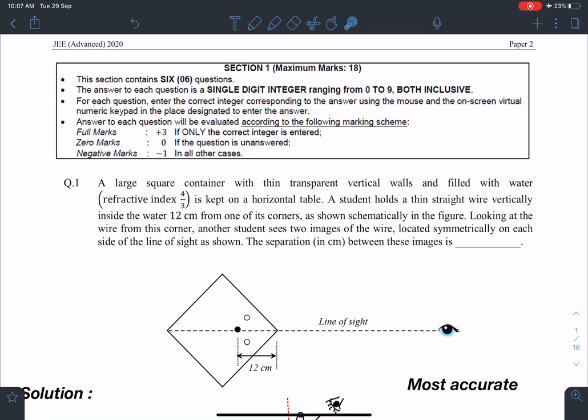So here is the statement of this problem. A large square container with thin transparent vertical walls and filled with water (refractive index 4/3) is kept on a horizontal table.